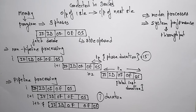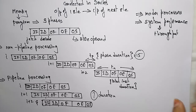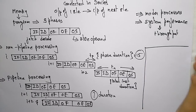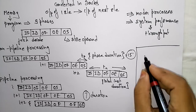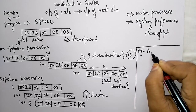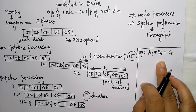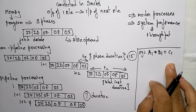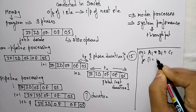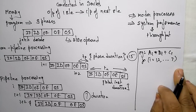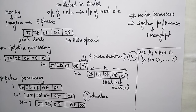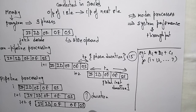Let us see an example of how the pipelining process is executed. The instruction to execute is: AI star BI plus CI, for I equal to 1 to 7 — meaning 7 instructions will be performed in 7 cycles. Each sub-operation is performed in a segment within a pipeline, and each segment has one or two registers connected in a combinational circuit.